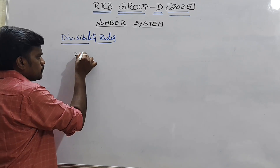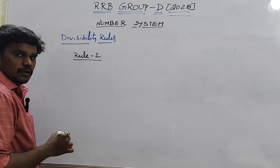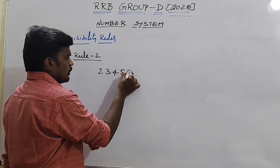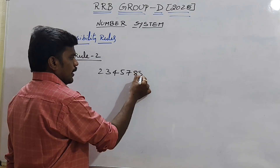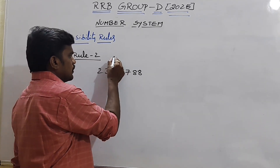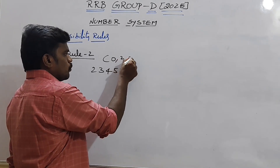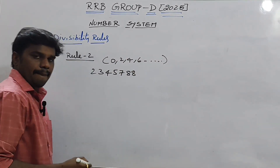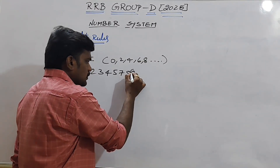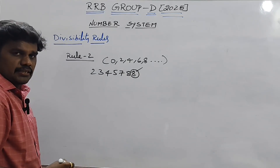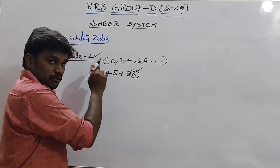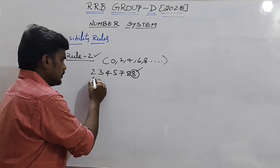Rule number 2: Let us take the number 2,345,788. Whenever the last digit is 0, 2, 4, 6, or 8, the number is definitely divisible by 2. Here the last digit is 8, so this entire number is divisible by 2.